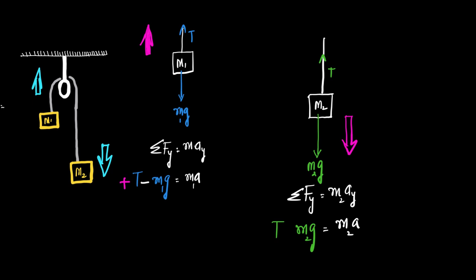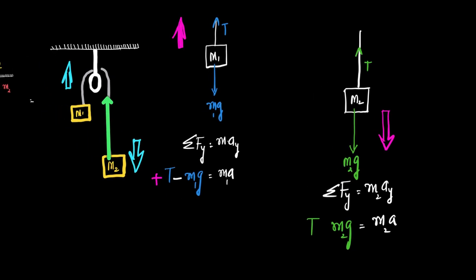Tension originates from the point of contact and goes away from it, and weight always pulls the body towards the earth. For m2, there are two forces: tension going away from the body, and m2·g acting downwards. The net direction of motion is downwards, so downward forces are positive and upward forces are negative. Therefore: minus T plus m2·g equals m2·a. This gives us equation two.